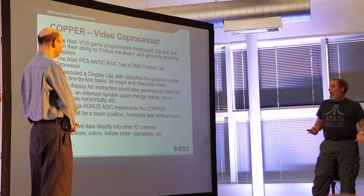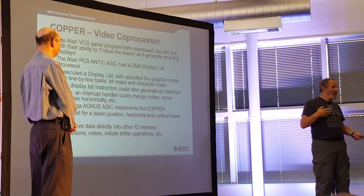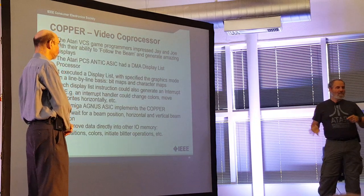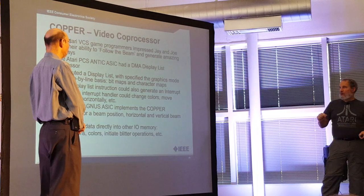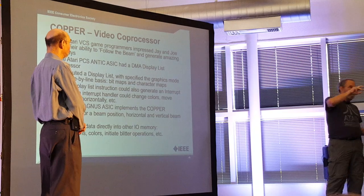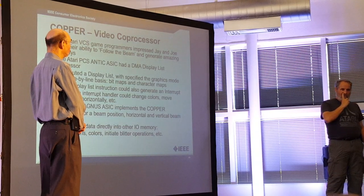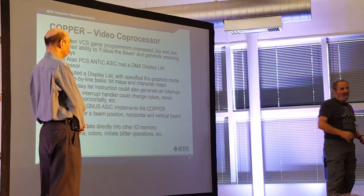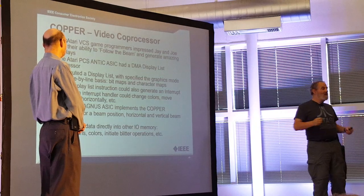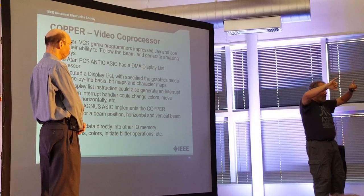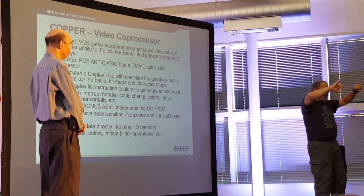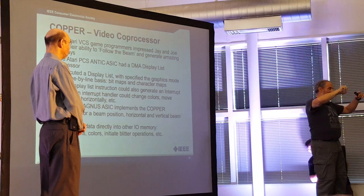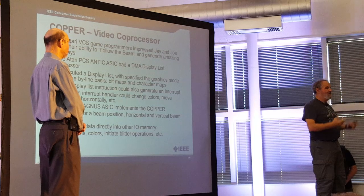Agnes is an order of magnitude more powerful. It executes a display list and can trigger interrupts to change palette registers or reposition things horizontally. It can wait for a given beam position horizontally or vertically and make changes right there. It can move data from anywhere in memory to any of the chips, change colors, change positions, initiate blitter operations, and even double-buffer within a single frame.